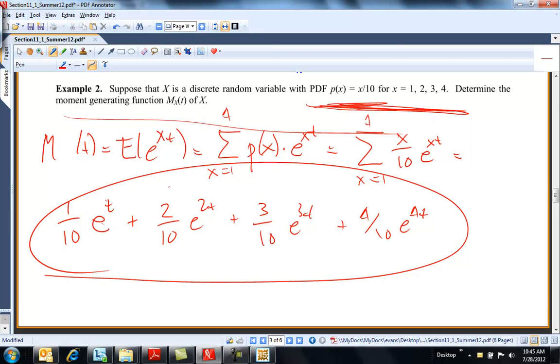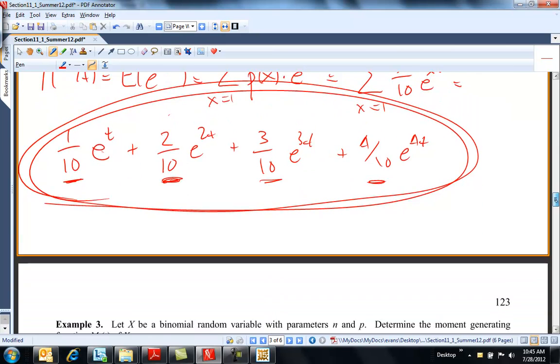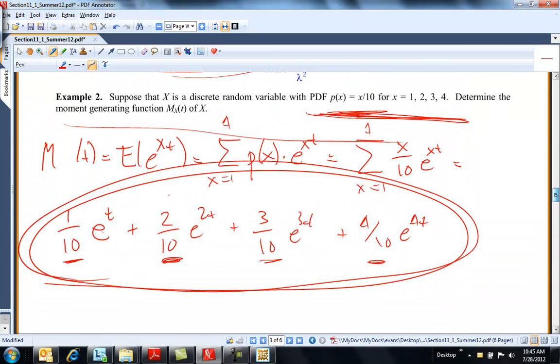And you can kind of see when X is equal to 1, there's the mass function when X is 2. There's the probability at 2, probability at 3, probability at 4. And so now if you wanted to find the mean, you would just take the first derivative of this with respect to T and stick in T equals 0. I wonder if I did that in the Maple worksheet. I bet I did.